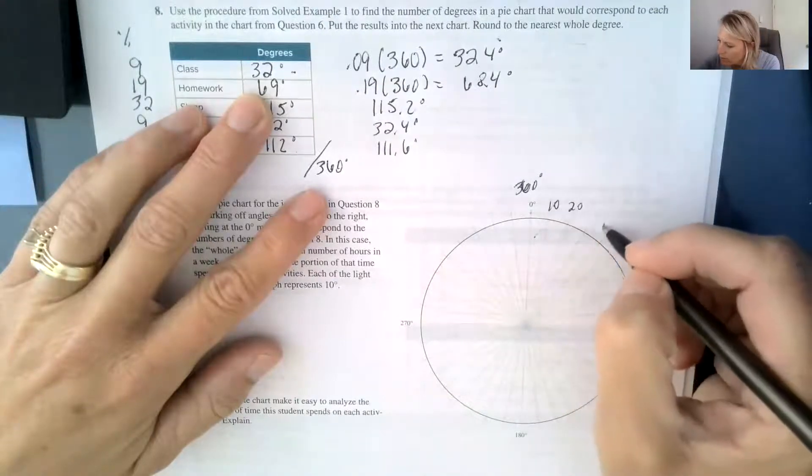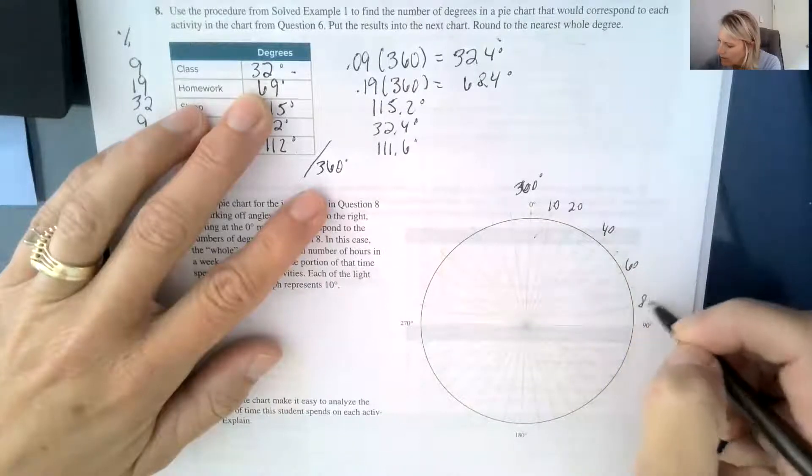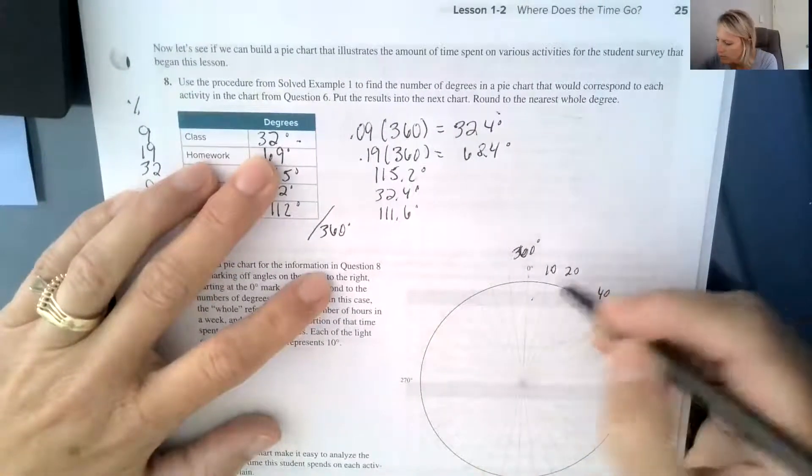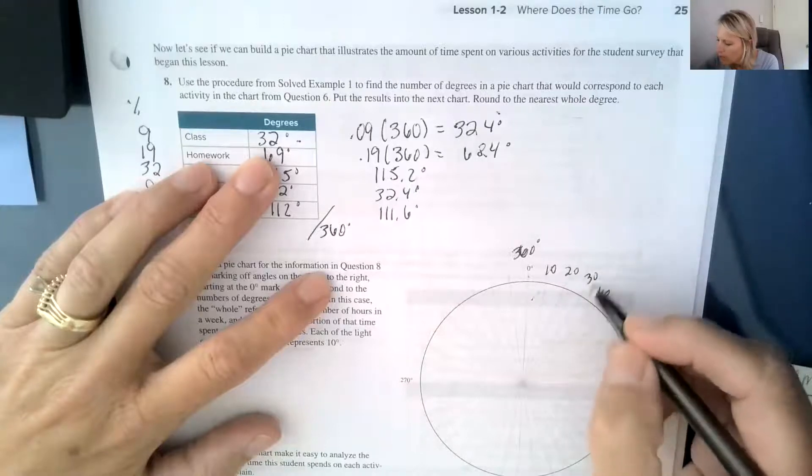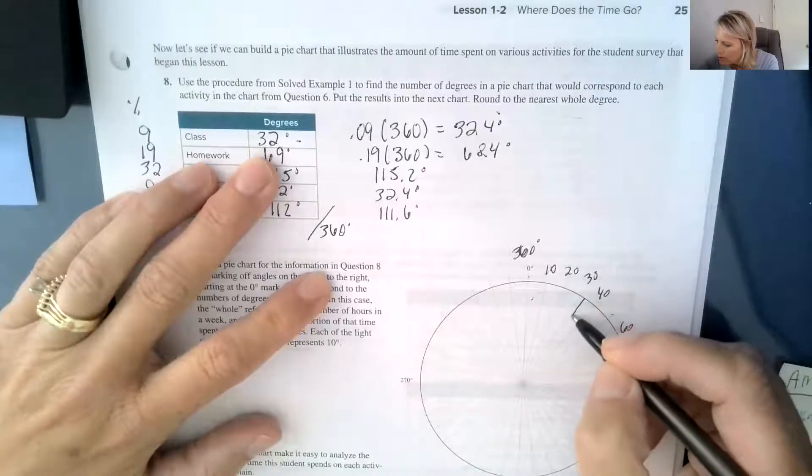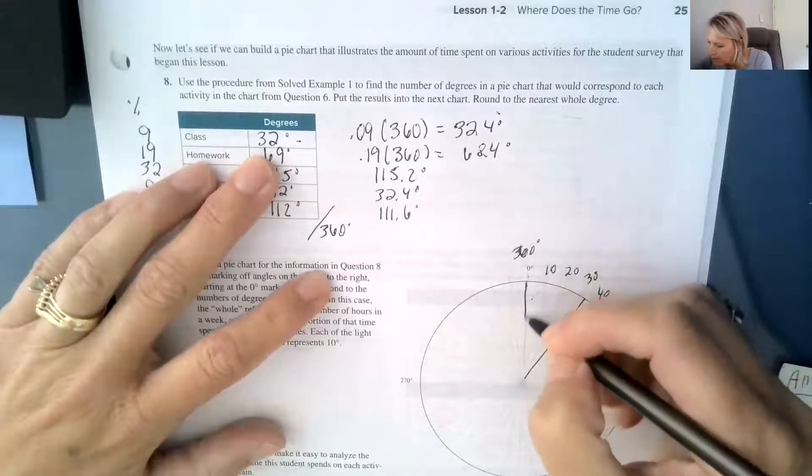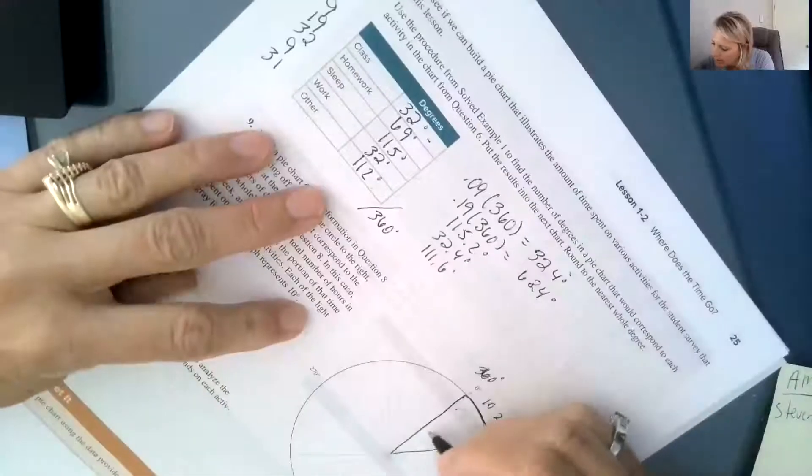So it looks like each of these are 10, so 10, 20, 30, 40, 50, 60, 70, 80, and my first one is 32. So I'm going to start at 0, and I'm going to go over between the 20 and the 30. I'm going to go just past the 30 for 32, and I'm going to make this right here. This part of my pie right here looks like it's for class.